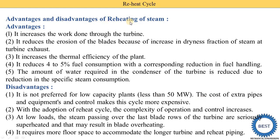The advantages of the reheat cycle are: First, it increases the work done through the turbine — this is the basic requirement of the reheat cycle. Second, it reduces erosion of the blades because it increases the dryness fraction of steam at the turbine outlet. Third, it increases the thermal efficiency of the plant. Fourth, it reduces fuel consumption by four to five percent. Fifth, the amount of cooling water required in the condenser is reduced due to reduction in specific steam consumption.